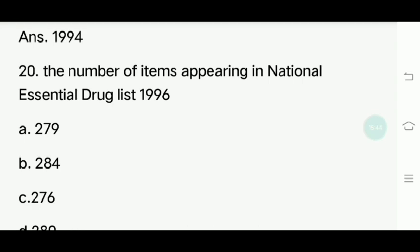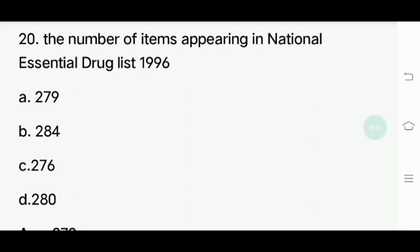Twentieth question: How many items are there? Options: 279, 284, 276, 280. Answer is 279.